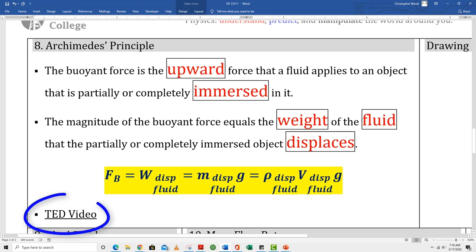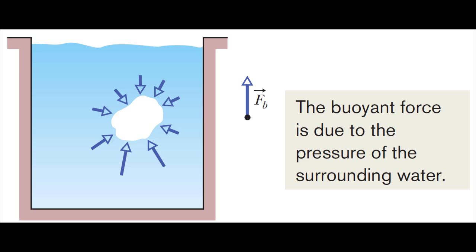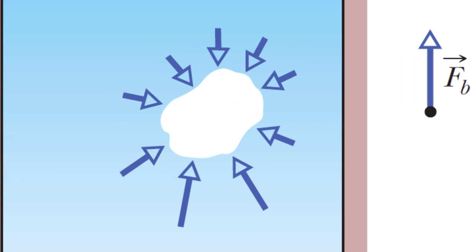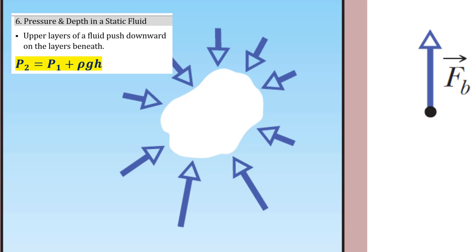Make sure you watch the TED video that's included in the lecture folder. Here's a good visual showing the buoyant force. You can see the force vectors at the bottom of this object are longer than the force vectors at the top. That's because the pressure is greater at the bottom compared to the top because of the pressure-depth equation.